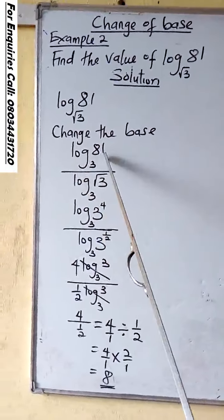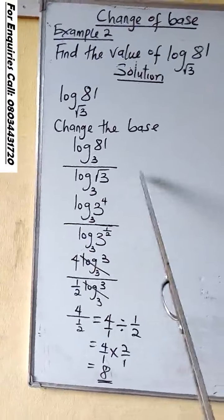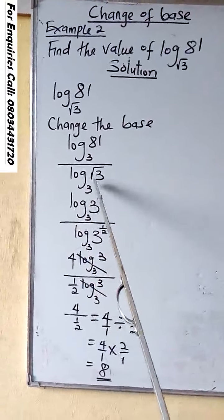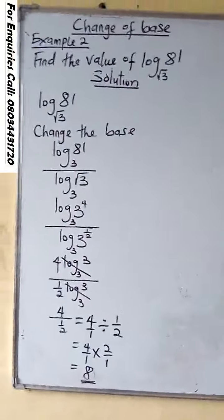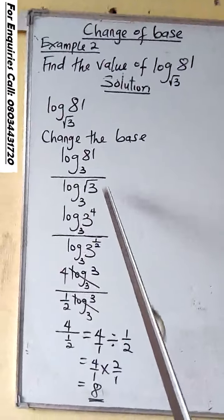Log 81 base 3, over log √3 base 3. You can see what happened there. Our new base is 3.